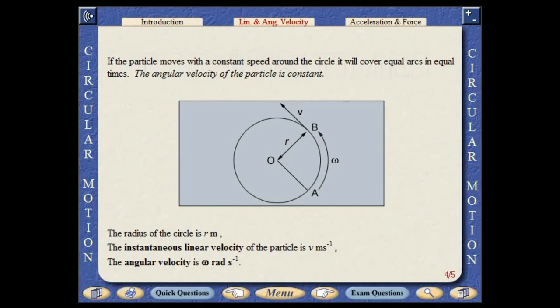If the particle moves with a constant speed around the circle, it will cover equal arcs in equal times. The angular velocity of the particle is constant.